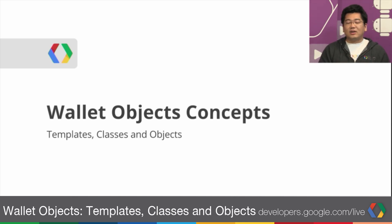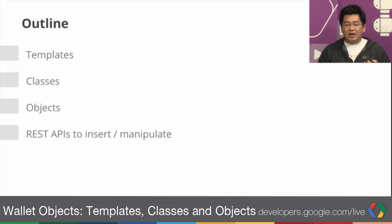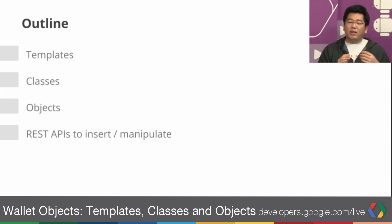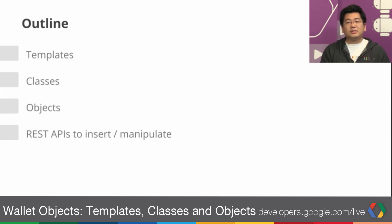Specifically, we're going to be talking about how data is stored and represented, and then how we convert this data into the UI that you see. Then we're going to talk about how to insert and manipulate this data using the Wallet Objects APIs. So first, let's go over some of the concepts.